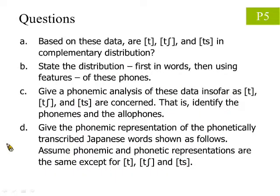Question A asks you whether the sounds [ts], [ch], and [t] are in complementary distribution. Question B asks you to state the distribution of these sounds, first in words, then using features. Question C asks you to analyze these three sounds — that is to say, identify the phonemes and allophones.